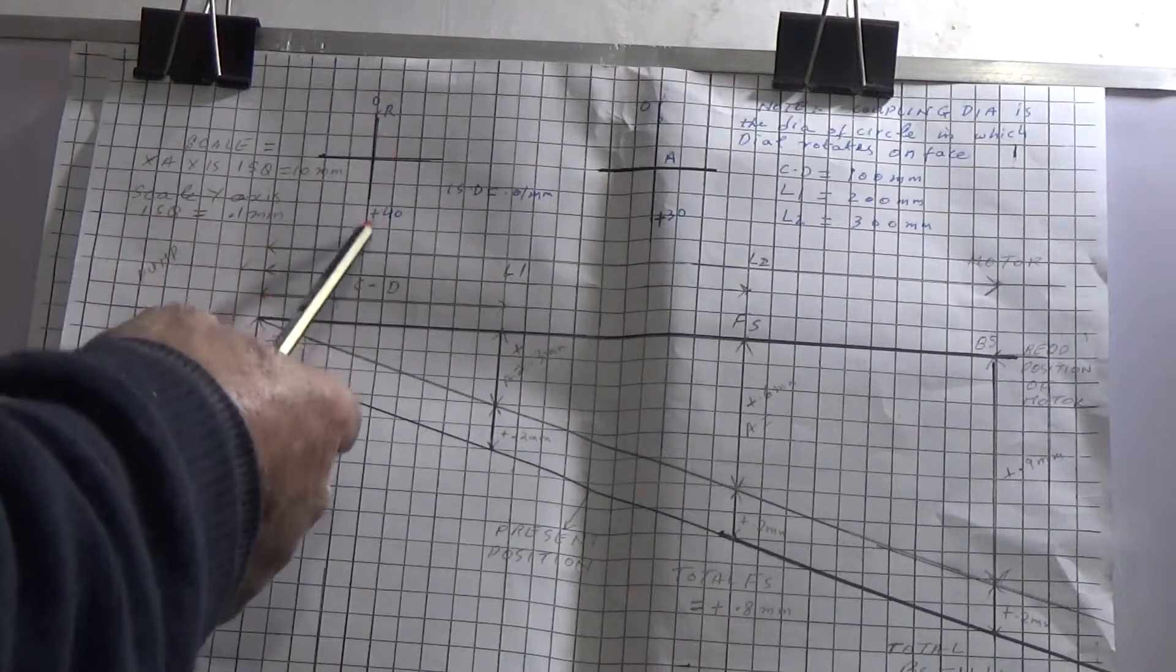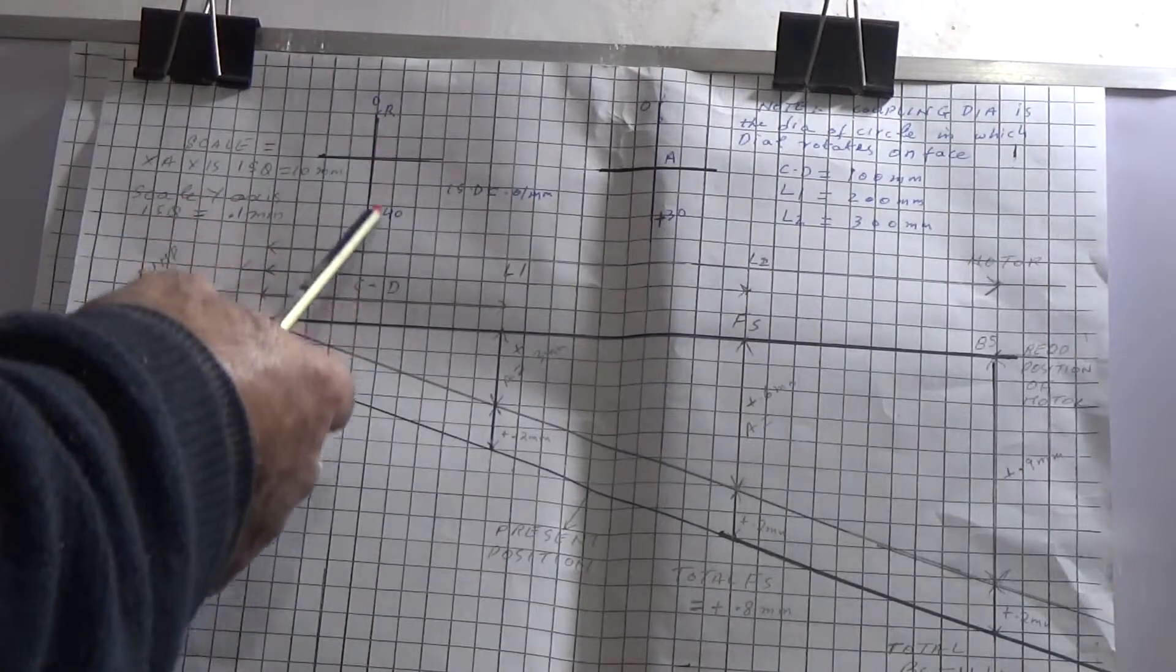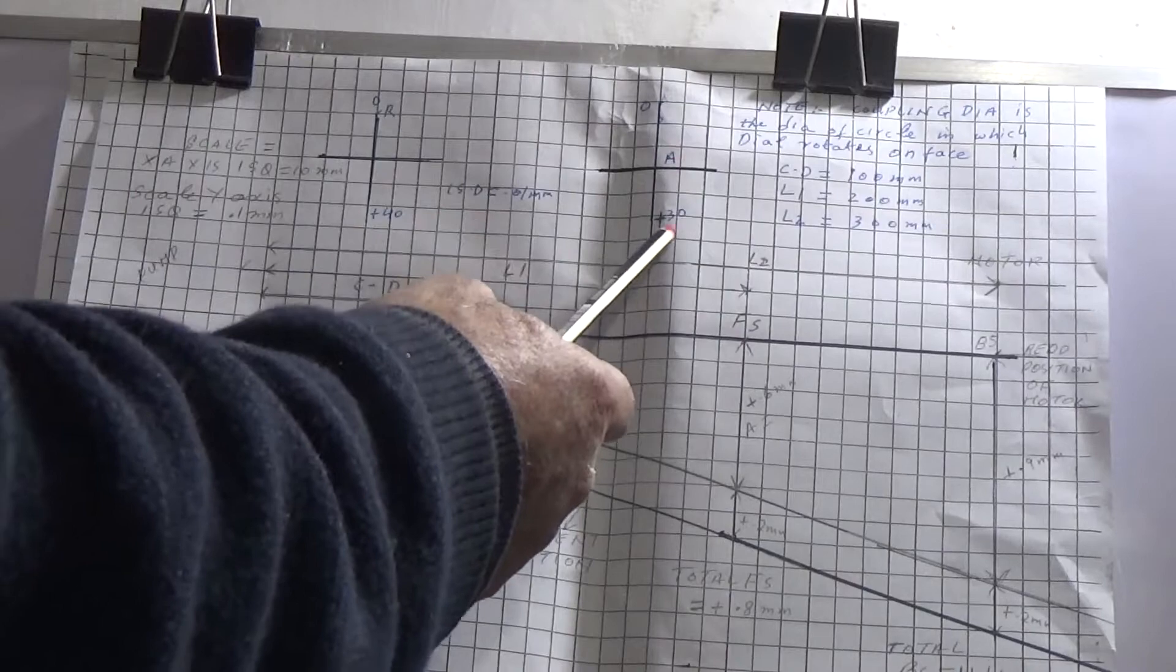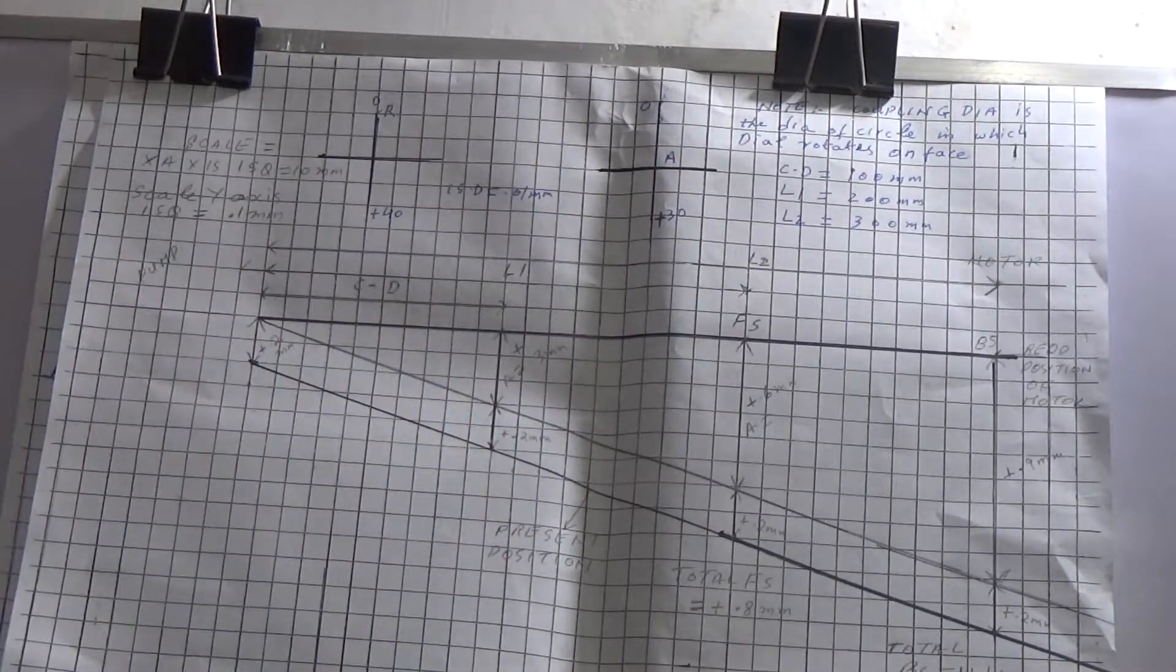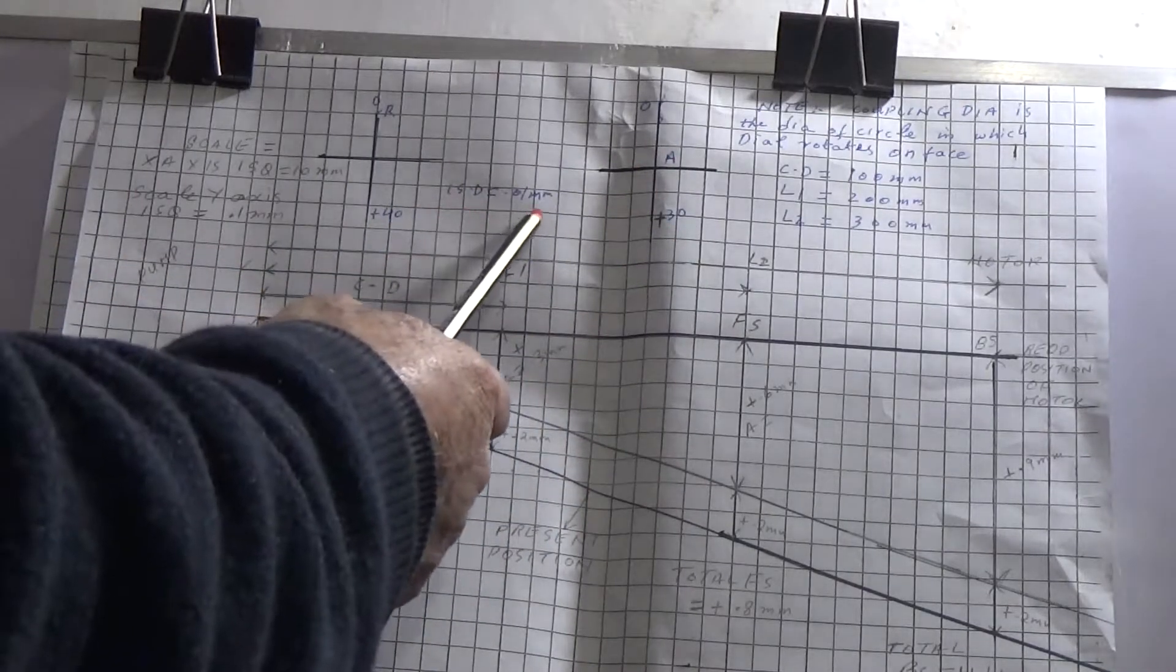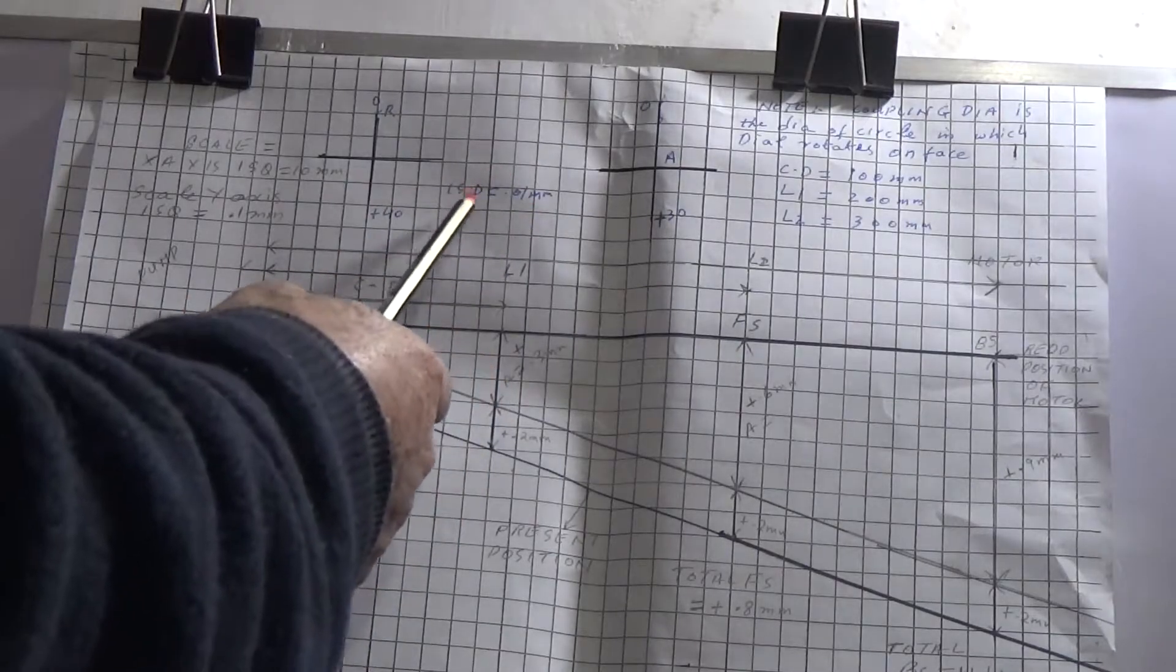These are your readings. Radial reading is plus 40, and this is your angular reading plus 30 here. Your dial indicator is in one small division of 0.01mm in your dial indicator.